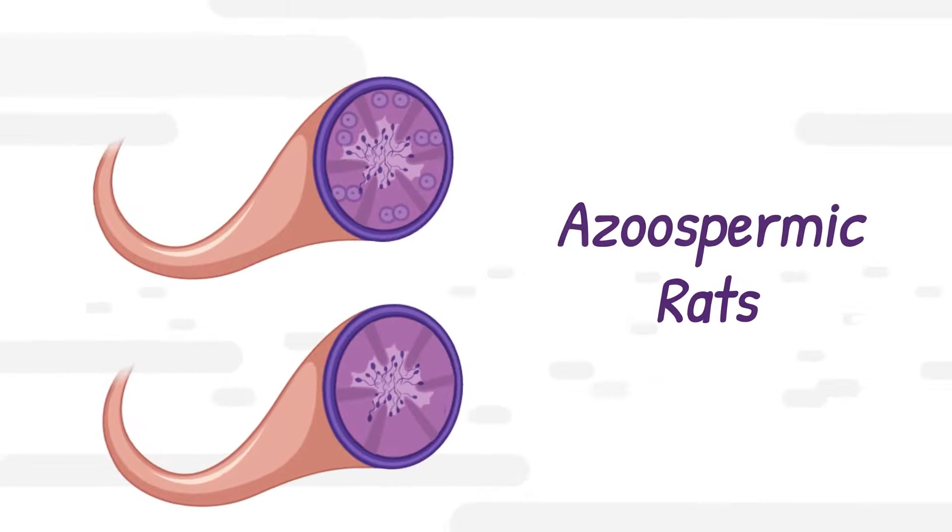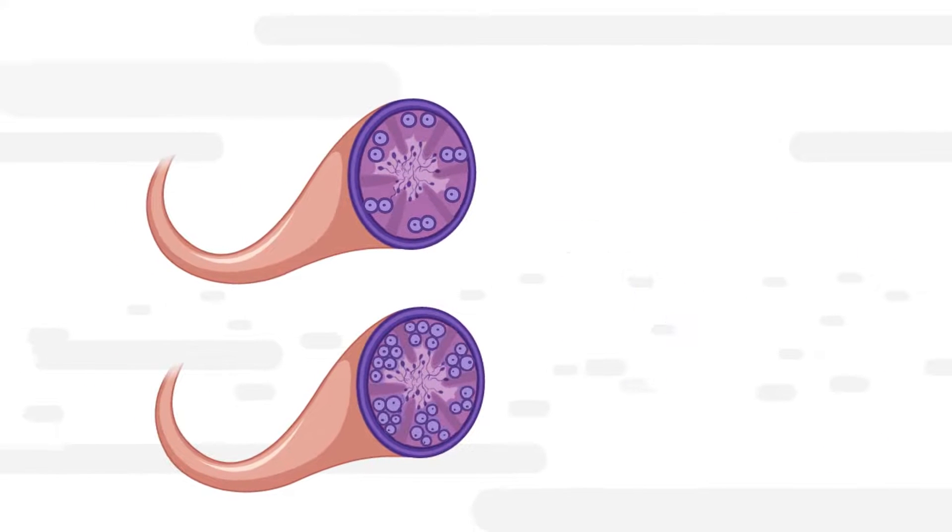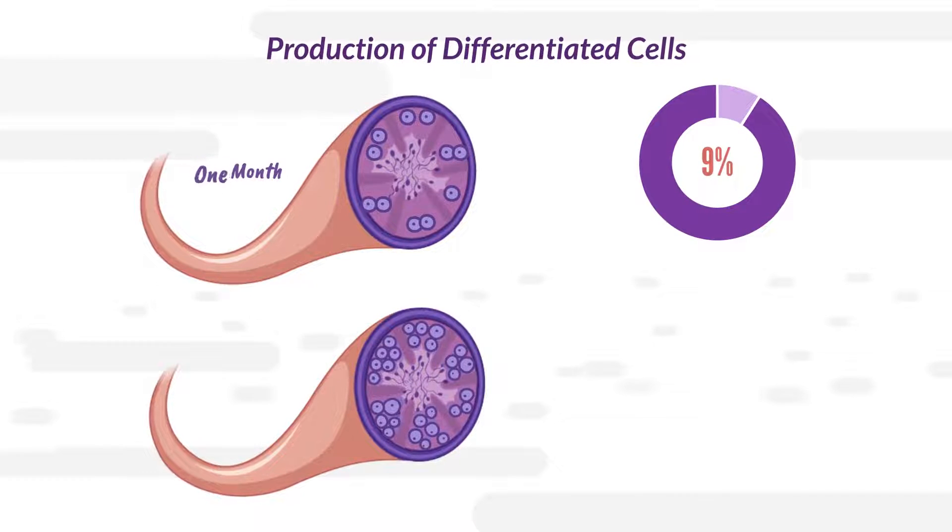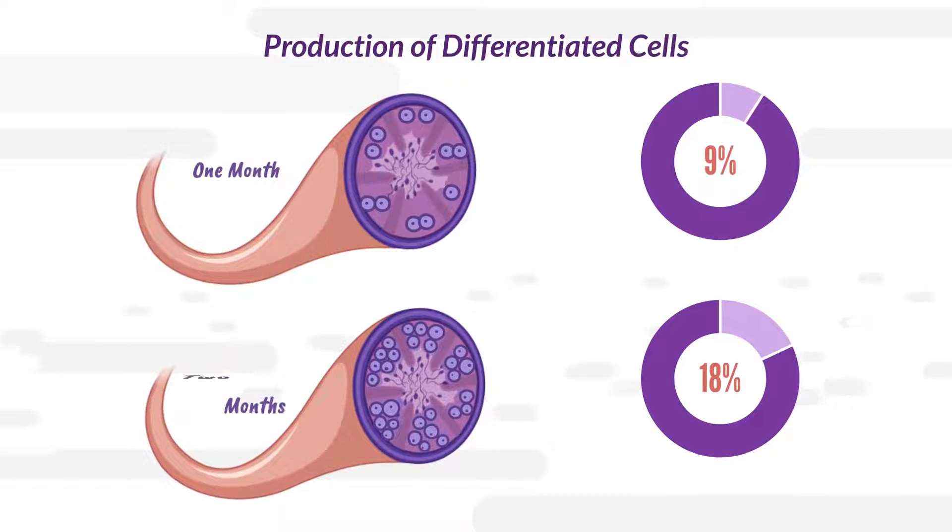We examined the effects of Prolistem using azoospermic rats. Prolistem restored the production of differentiated cells in 9% after one month and 18% after two months.